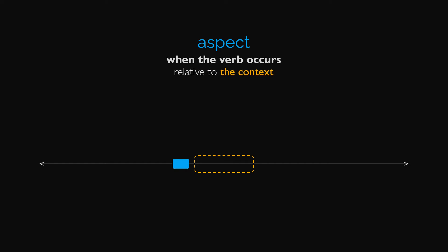We'll cover the different aspects and their details in a part 2 video, but for now, it's important simply to acknowledge that the timing of the verb and the timing of the context do not always align.